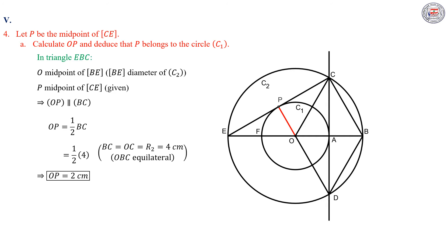We still have to deduce that P belongs to the circle C1. Since OP is equal to 2 centimeters and it is equal to R1, since R1 from the given is 2 centimeters, then we can deduce that P belongs to the circle C1.